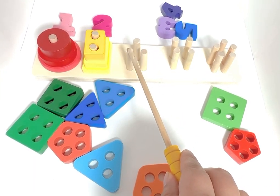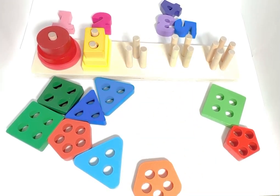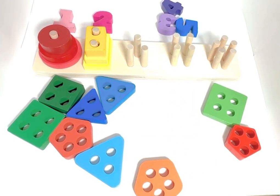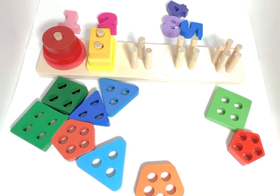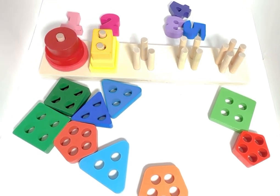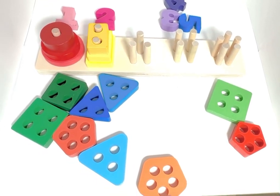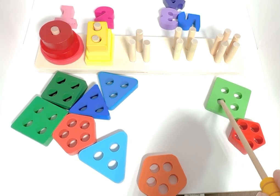One, two. Three pegs. Which shape over here has three holes? Let's count this one. One, two, three, four. Nope.